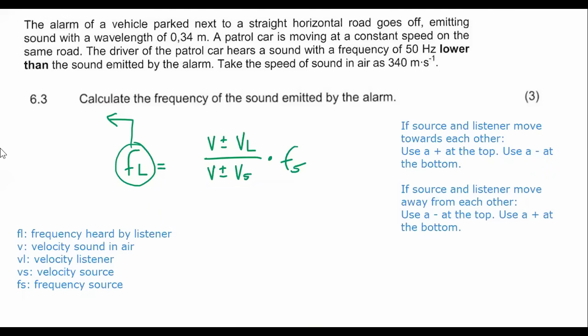Then the other formula that pops up every now and then is this one: V equals F multiplied by wavelength. This is velocity of the wave, this is the frequency of the wave, and then this is the wavelength of wave.